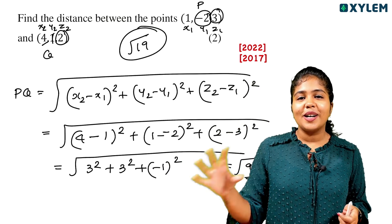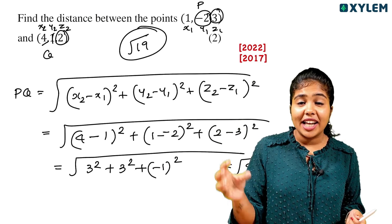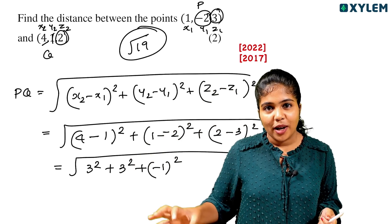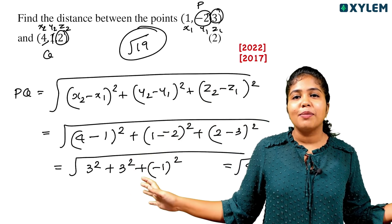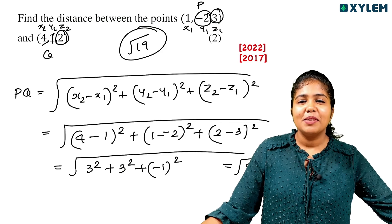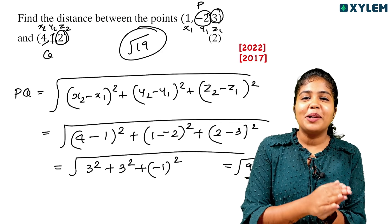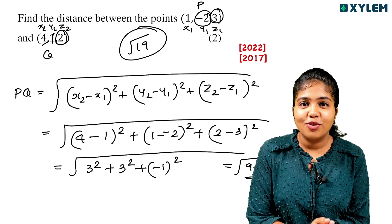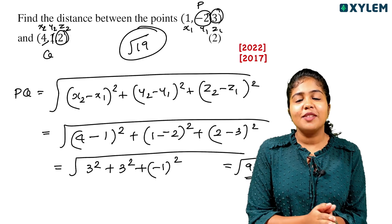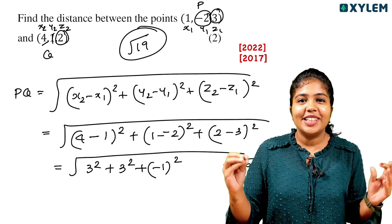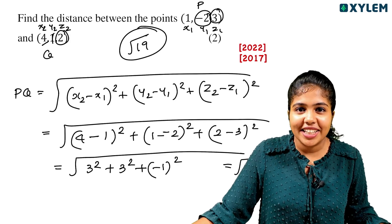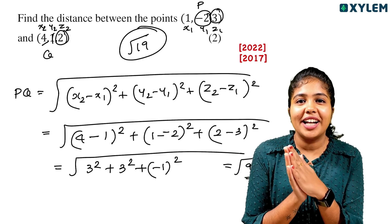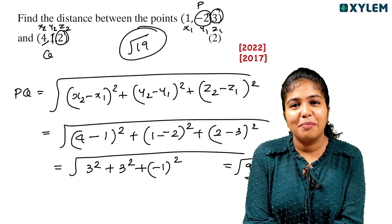We have covered 3 concepts: coordinates of a point in space, octants, and distance between two points. This chapter is very easy. This video is very useful. If you have any questions, comment or like. Thank you so much for watching. Bye.